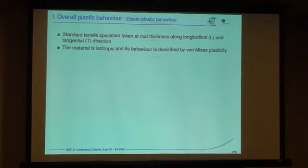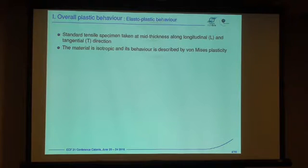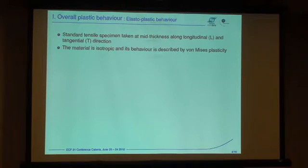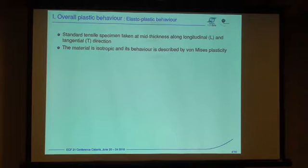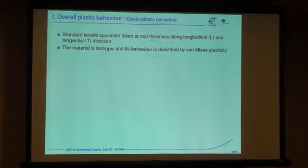We characterize the plastic behavior of the material using tensile specimens taken through the thickness of the pipe, along the longitudinal and the tangential direction. It turns out that this material is isotropic, and the main reason for that is that it's a seamless pipe. Previously, we have been working on UOE pipes — those pipes are made of plates and are usually very anisotropic. In that case, we're quite lucky; we don't need to use fancy anisotropic models. Von Mises plasticity is enough.